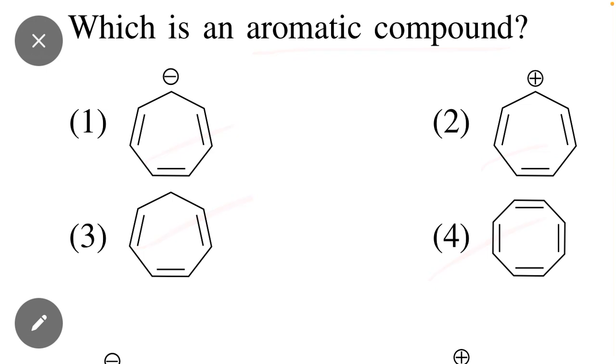The first molecule: keep in mind one double bond means one pi bond containing two pi electrons. Here you can see that one pi bond means two pi electrons, two pi electrons, two pi electrons, and one negative charge.